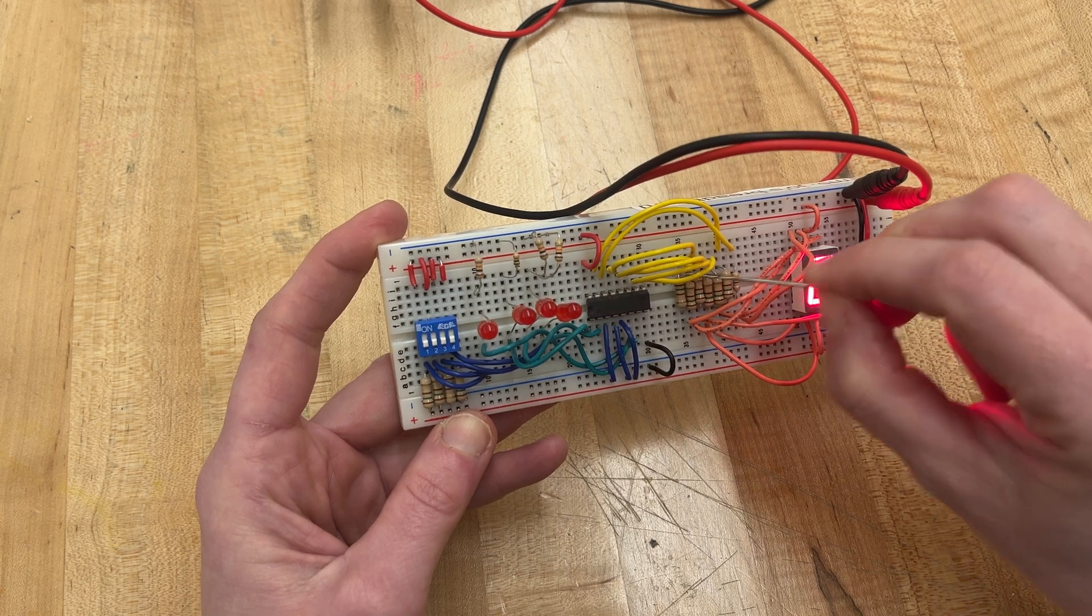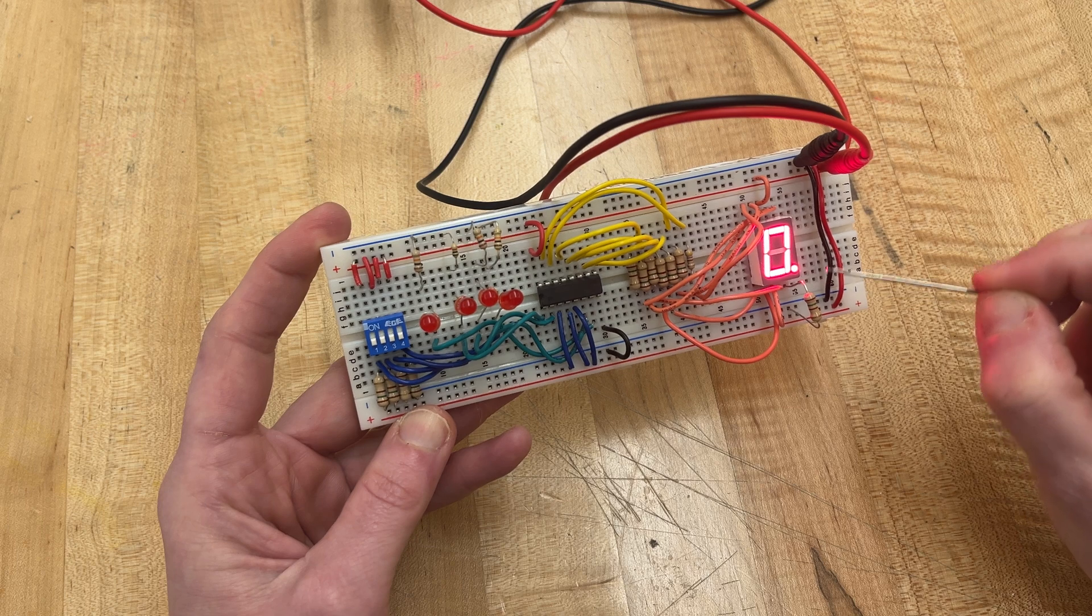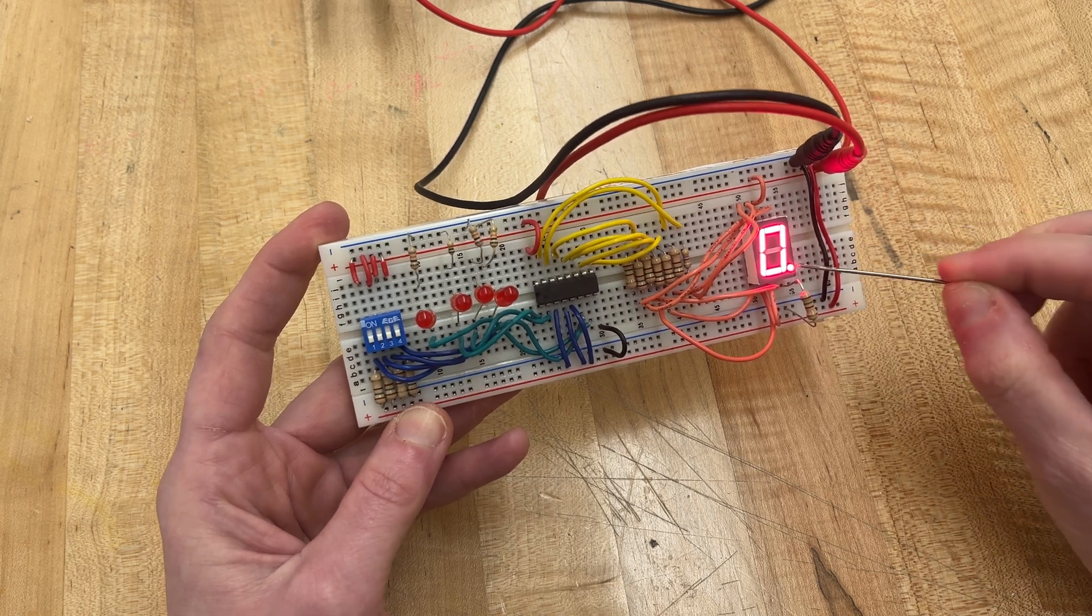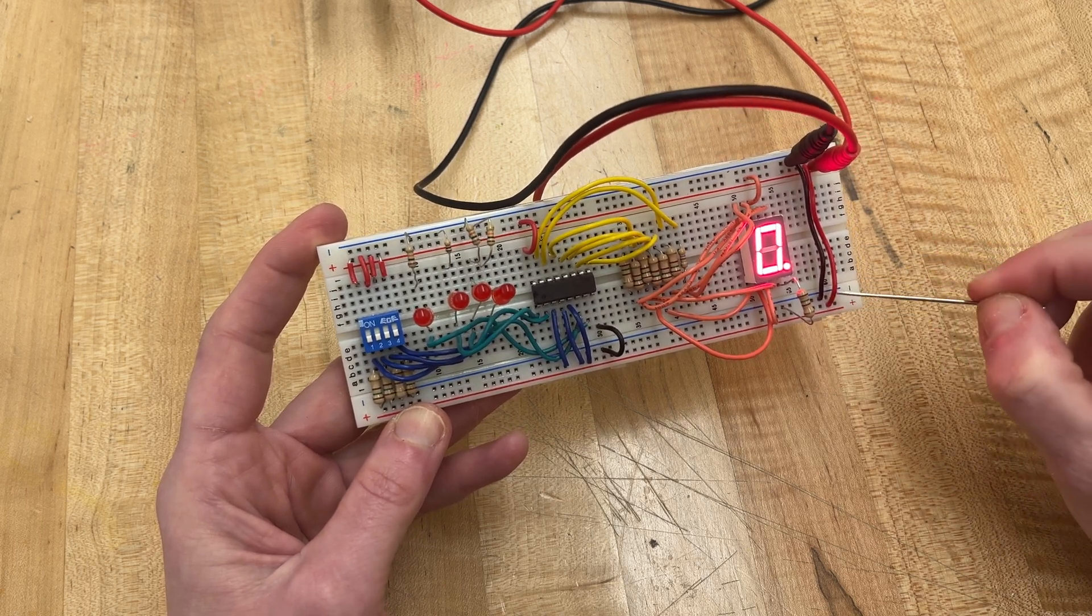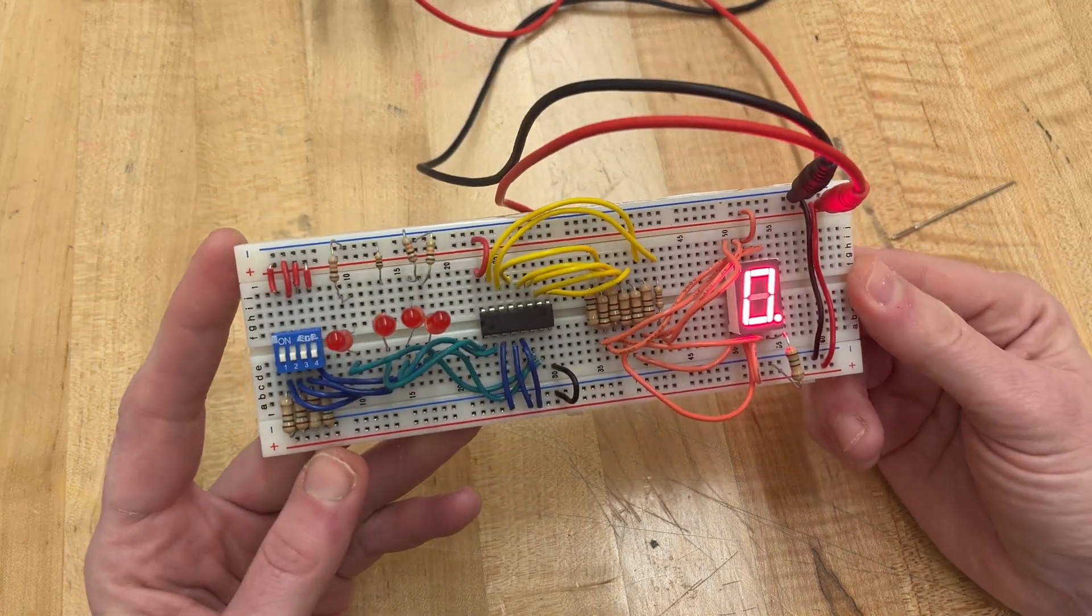They need to all go into resistors and then come out and into the appropriate place on the display. Your decimal needs to go into the negative. Be sure you have them connected over here, and then your decoder should work.